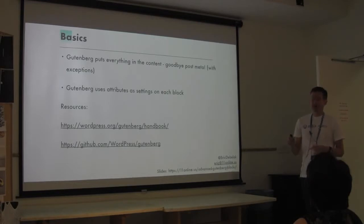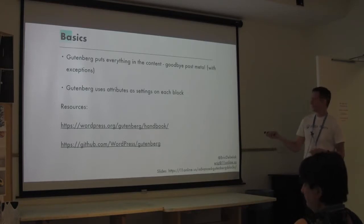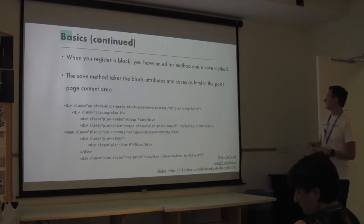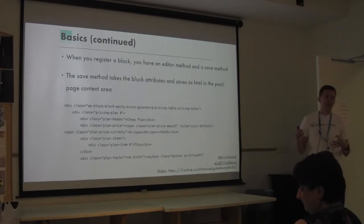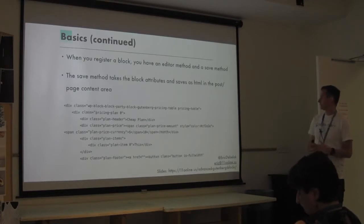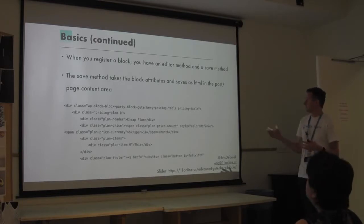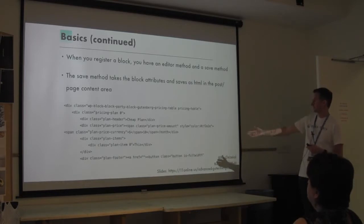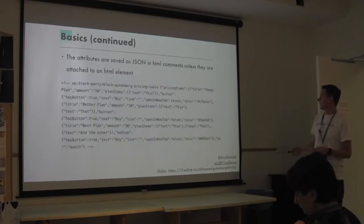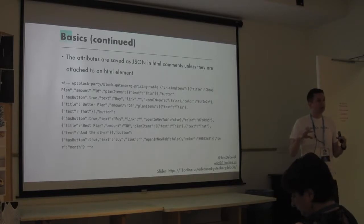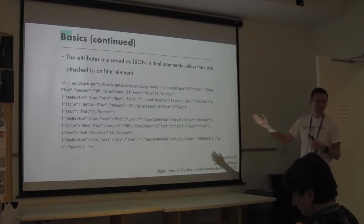Gutenberg uses attributes as settings on each block. When you register a block, the block is basically two things: an edit method and a save method. What the save method does is take all your attributes - all those settings - and saves them as HTML. Attributes can either be attached to an HTML element, or they're saved as JSON in HTML comments, which is a kind of weird way of doing it but works really well.